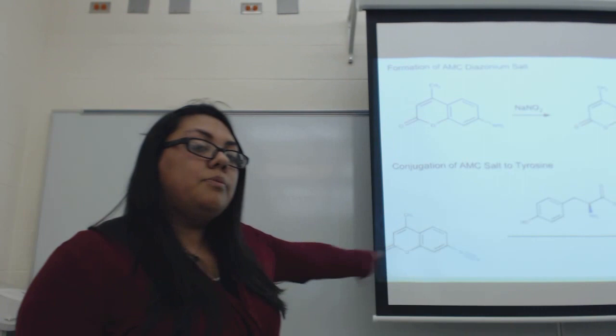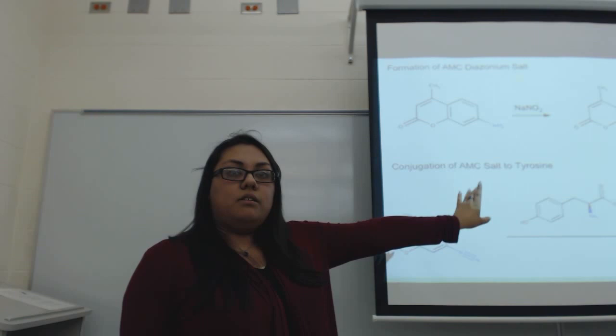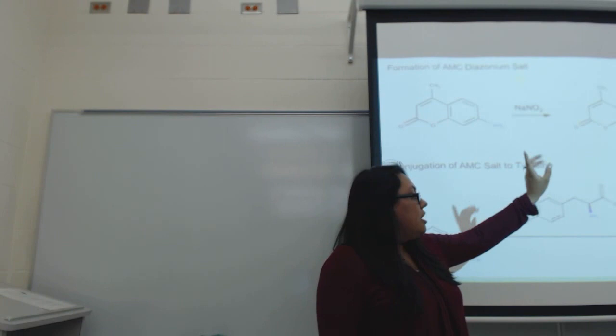Here is a representation of AMC in salt formation at the top — this is how we expect to get it. And after that, we expect to use that molecule in conjugation with tyrosine, the amino acid, and we expect to get that resulting molecule.